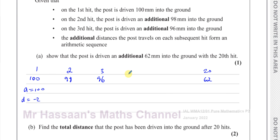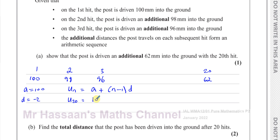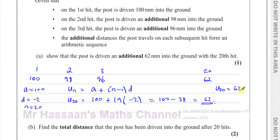The additional distances going into the ground decrease by 2 each time. We want to find the additional millimeters on the 20th hit. The formula for the nth term of an arithmetic sequence is a plus (n minus 1) times d, where d is the common difference. For the 20th term: 100 plus (20 minus 1) times negative 2 = 100 minus 38 = 62. So the 20th term equals 62 millimeters.